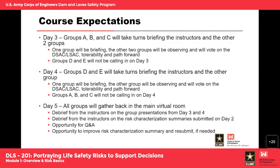On day four, groups A, B, and C will be off since they already went on day three. Groups D and E will do the same thing — they'll brief to the instructors and the other group, and the group not briefing will vote on DSAC or LSAC tolerability and path forward. On day five, we'll all gather back in the main virtual room for a debrief on the group presentations from days three and four, and observations from the risk characterization summaries. There will also be time to go back and make adjustments to individual risk summaries if needed.